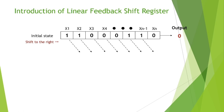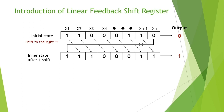We shift all the bits to the right by one digit, using the last two bits as the source of our XOR computation. After shifting one time, we get the new inner state: 1, 1, 1, 0, 0, 0, 0, 1, 1.